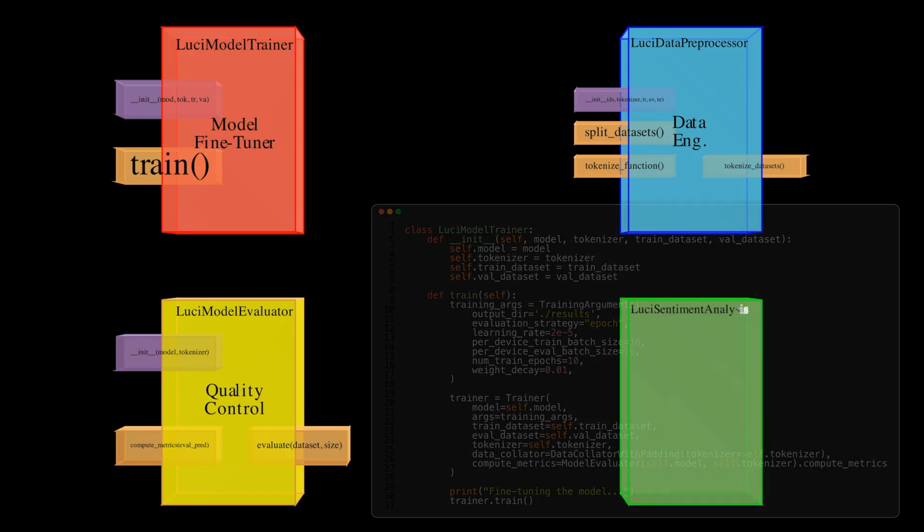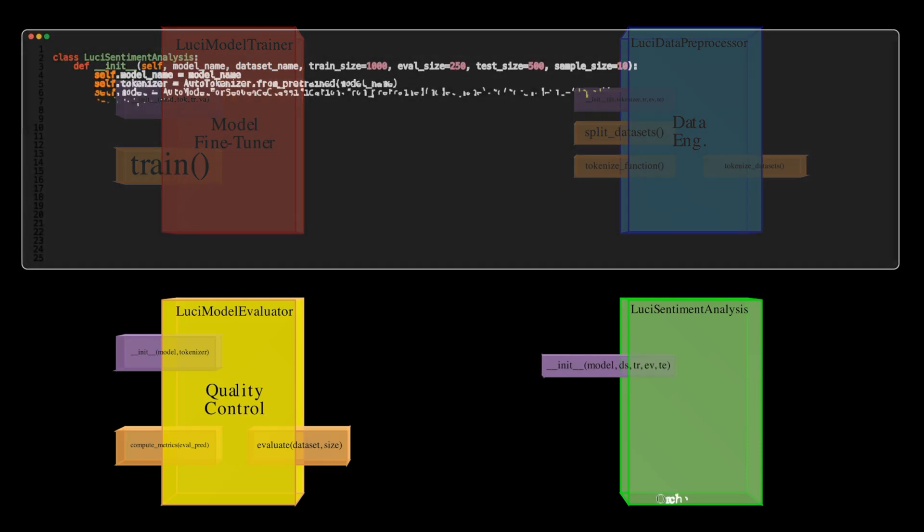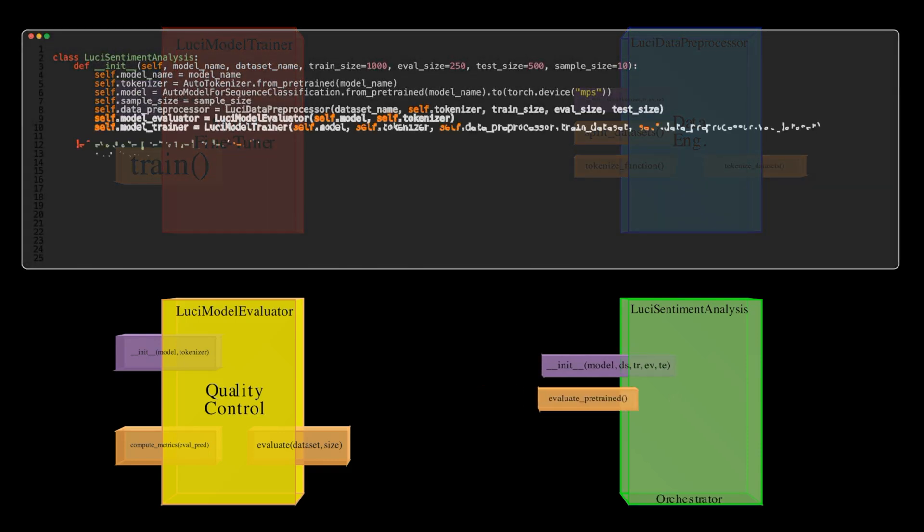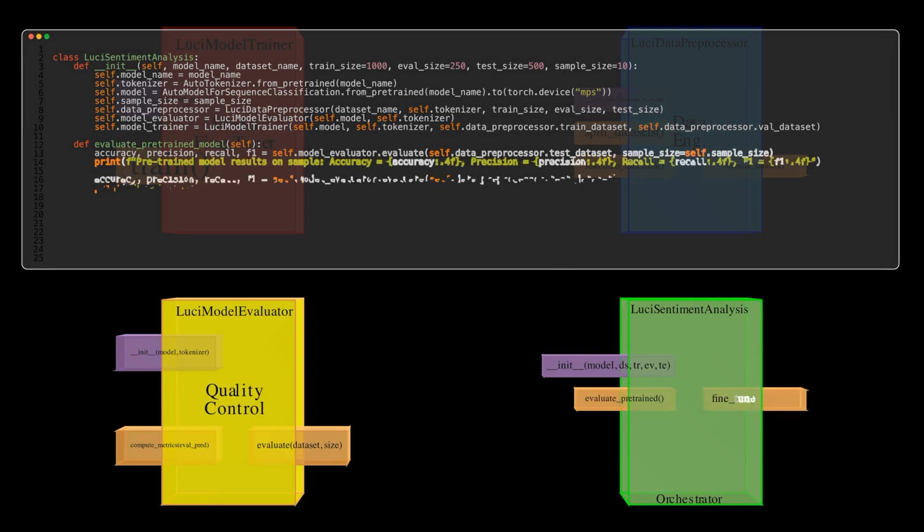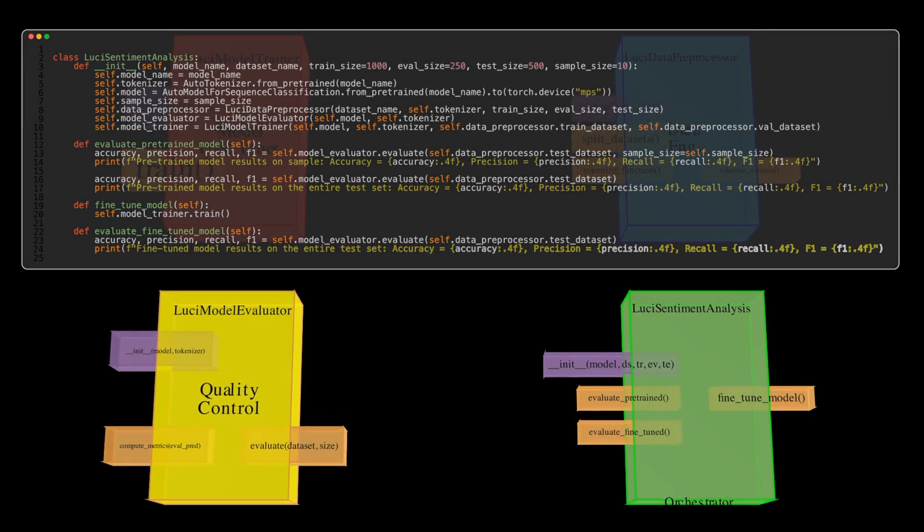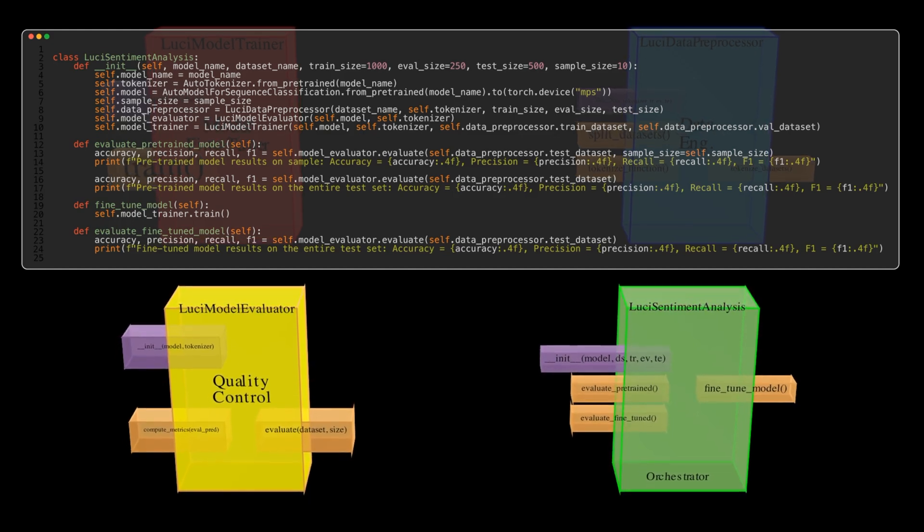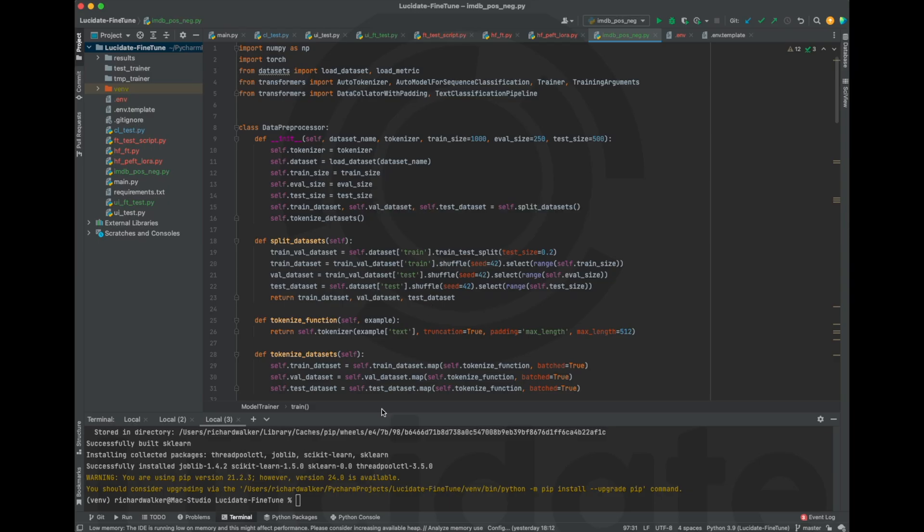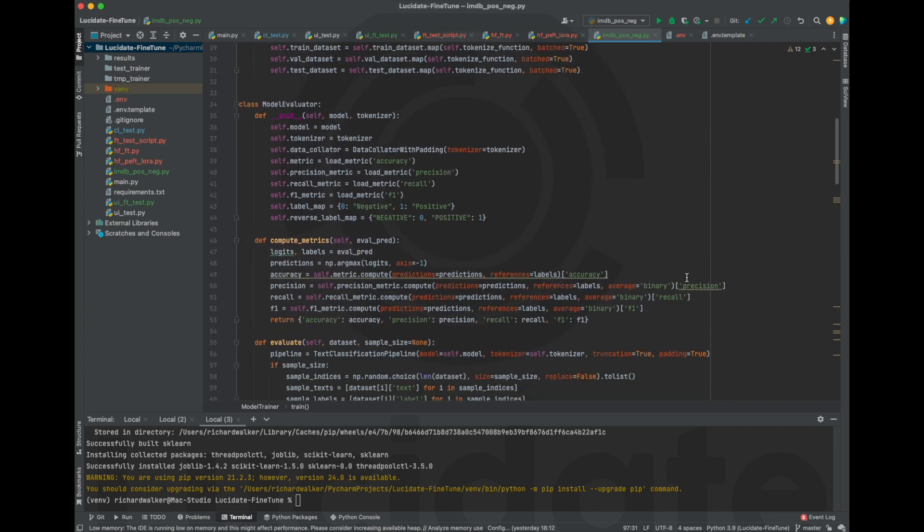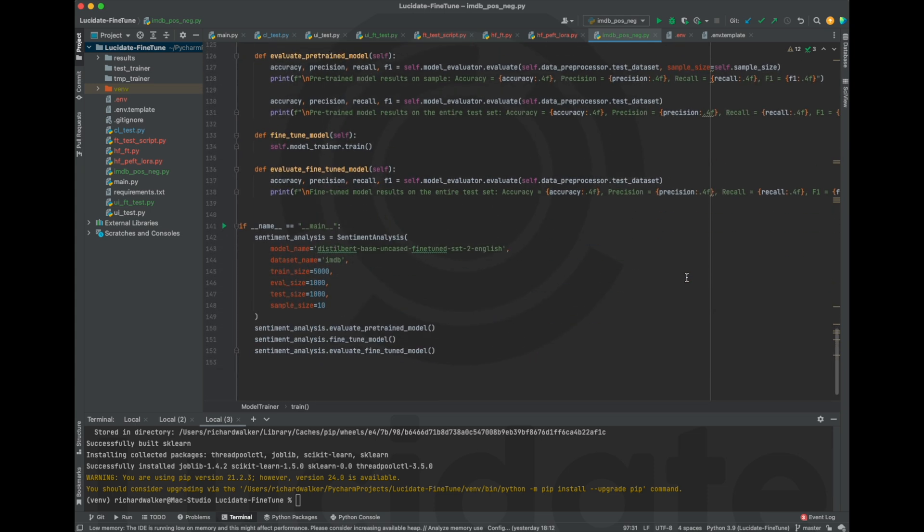Finally, the Lucy Sentiment Analysis class is the orchestrator of our AI system. After initialization with the model, the data set and the sizes of each of the trained validation test sets, it evaluates our pre-trained model on the whole data set after showing a random sample of the test data set on the screen. Then it fine-tunes the base model, evaluates the performance of this fine-tuned model relative to the base. Here's a full listing of the code. The main program creates a Lucy Sentiment Analysis object and runs through the methods that I just described to evaluate the base, fine-tune the base and then evaluate the fine-tuned model.